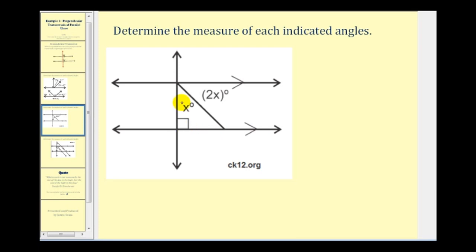Remember that if a line is perpendicular to one parallel line, it's also going to be perpendicular to the other parallel line, so we can go ahead and mark the corresponding angle here as a right angle. When a perpendicular transversal cuts two parallel lines, it forms eight right angles — eight angles that measure ninety degrees. So this angle here would also be a right angle and therefore it would measure ninety degrees.